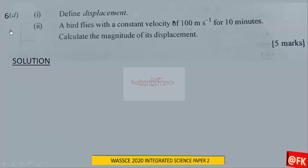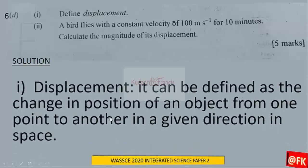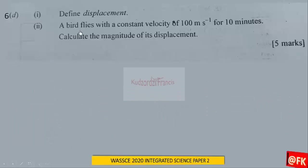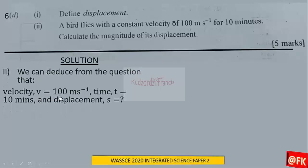Question 6: First, define displacement. Displacement can be defined as the change in position of an object from one point to another in a given direction in space. A bird flies with a constant velocity of 100 meters per second for 10 minutes. Calculate the magnitude of its displacement.